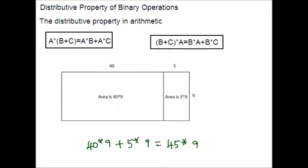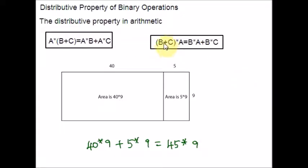FOIL is the standard way in American algebra of remembering how to multiply an algebraic expression — multiplying the first terms, outer, inner, and last terms. This is also an application of the distributive property in real life. Now, what about division? When we talk about the distributive property, we usually mean the distributive property of multiplication over addition. We could also ask about other distributive properties — for instance, does division distribute over addition?